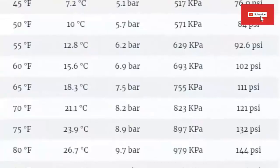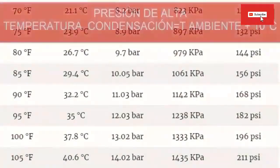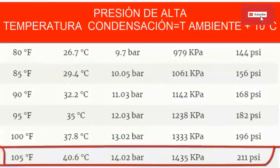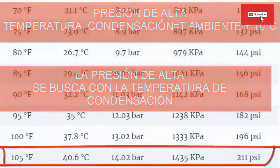Now we look for the high side pressure in the table. Taking an external ambient temperature of 30 degrees Celsius, we increase this value by 10 degrees Celsius and look in the table for approximately 40 degrees Celsius. This gives us a pressure of approximately 211 psi, equivalent to 14 bar.